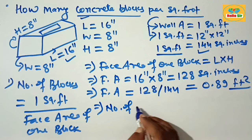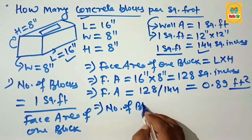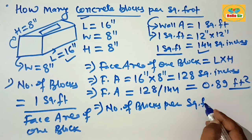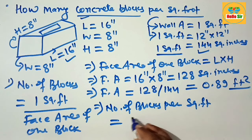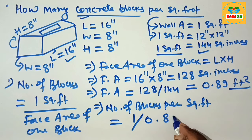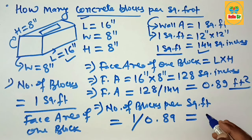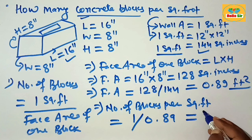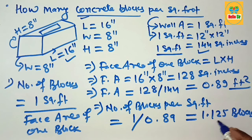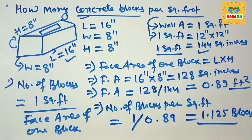Now calculate the number of blocks per square foot. Divide one square foot of wall area by the area of one block, which is 0.89 square feet. After division, this comes out to approximately 1.125 blocks. This means you need about 1.125 concrete blocks per square foot of wall area.